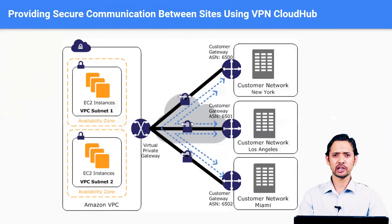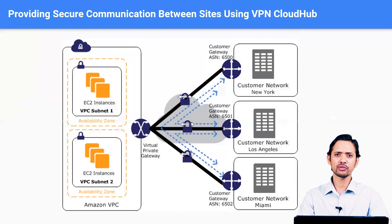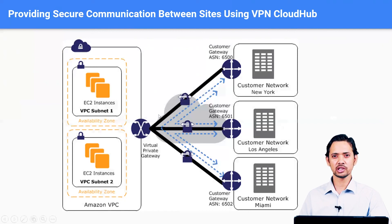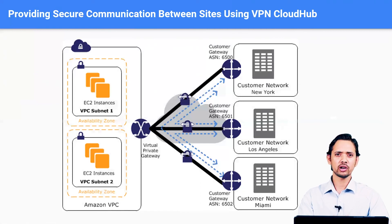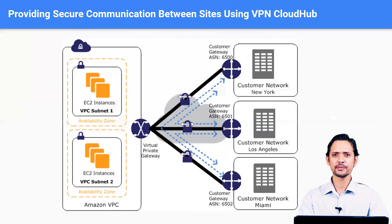If you have multiple corporate data centers across various regions and connect all of them to your VPC through VPN tunnels, those corporate data centers can even communicate with each other. For example, if you have corporate data centers in New York, Los Angeles, and Miami — all connected through a VPC gateway on the cloud with established VPN tunnels — these corporate networks can communicate with each other as well. This is the concept of VPN Cloud Hub, giving us a better picture of hybrid networking and how to integrate VPCs with corporate data centers.